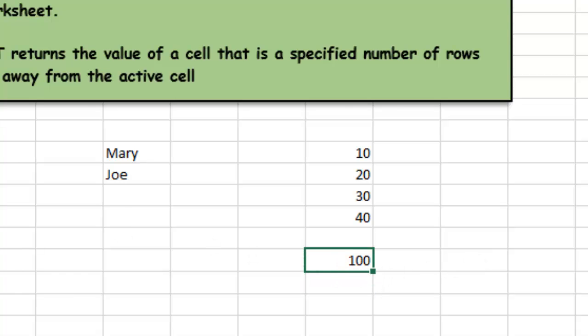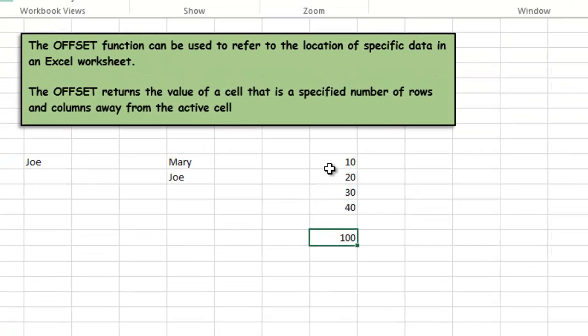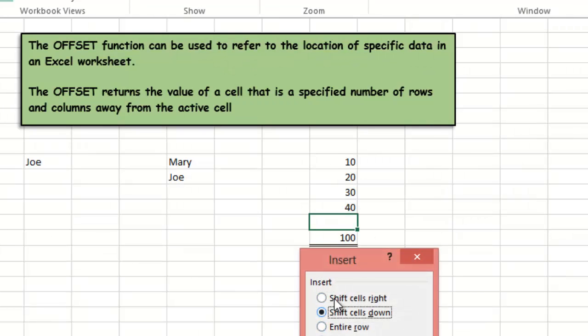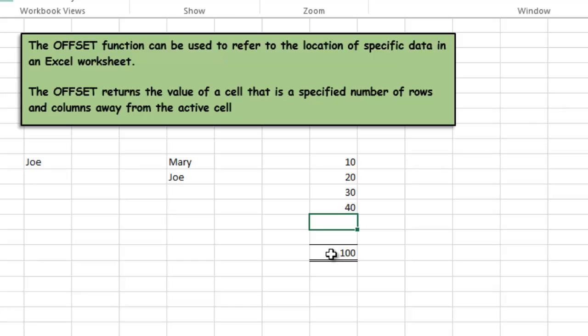Our SUM remains the same, but if we continuously add in rows or add in cells, it will not affect the formula that we have here. We will always be summing to one cell above the SUM function. So that's the OFFSET function and making your normal functions a little bit more dynamic with the OFFSET function.